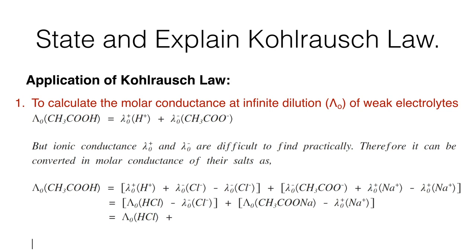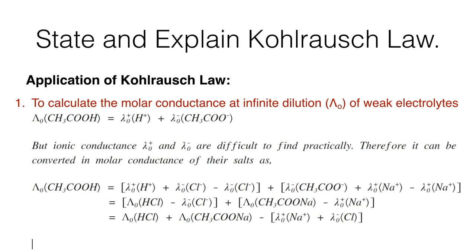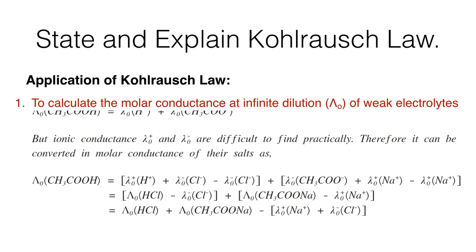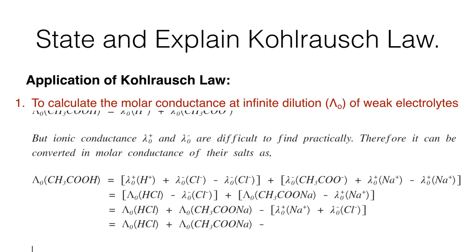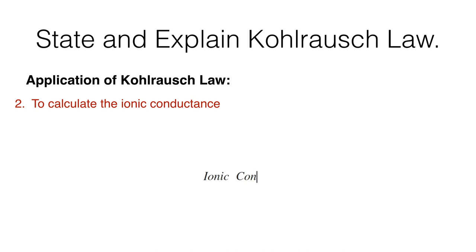Separating it out: λ⁰(HCl) + λ⁰(sodium acetate) − [λ⁰(Na⁺) + λ⁰(Cl⁻)]. This gives: molar conductance of acetic acid = molar conductance of HCl + molar conductance of sodium acetate − molar conductance of sodium chloride.